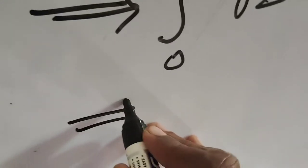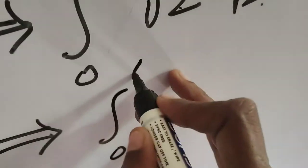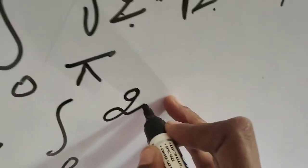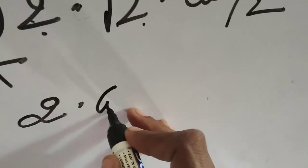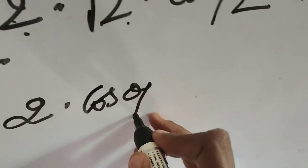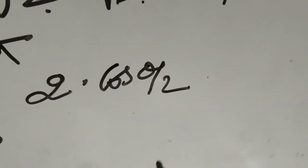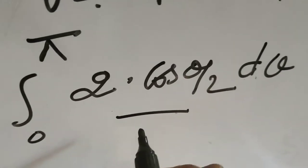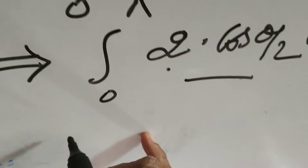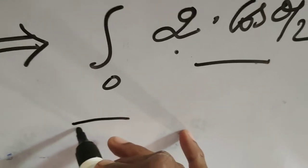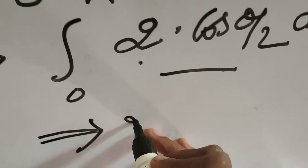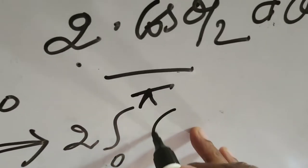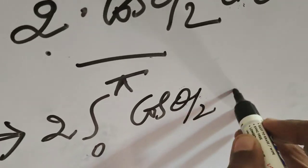That implies: integral from 0 to π of 2 into cos(θ/2) dθ. Since 2 is a constant, it comes before the integral: 2 into integral from 0 to π of cos(θ/2) dθ.